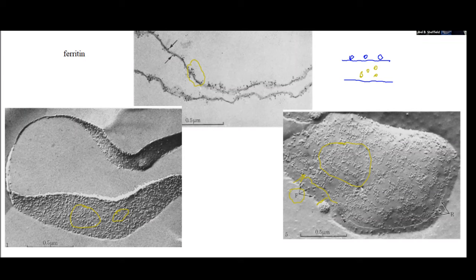So now what's happened is, among other things, this process, which was originally called by Moore freeze etching, now became known as freeze fracture, followed by etching as an option.